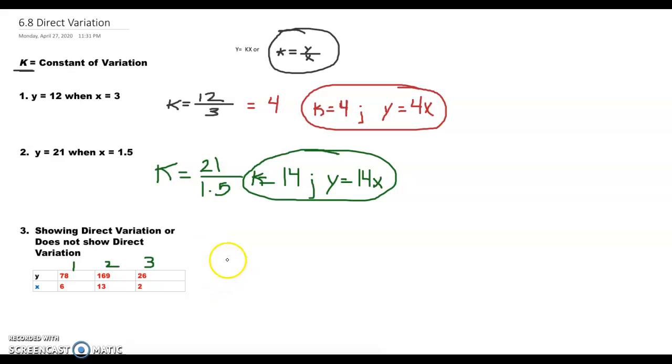The first one, we have K equals 78 over 6. The second one, we have K equals 169 over 13. And lastly, we have K equals 26 over 2.